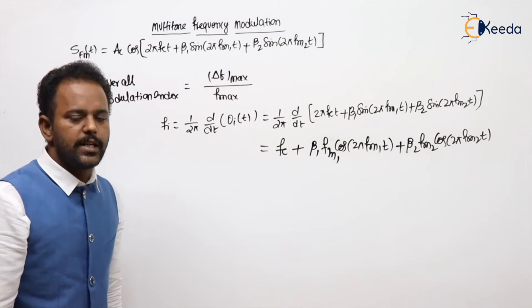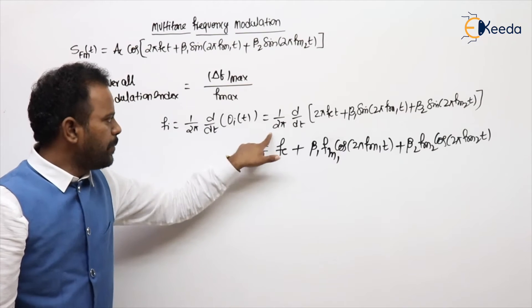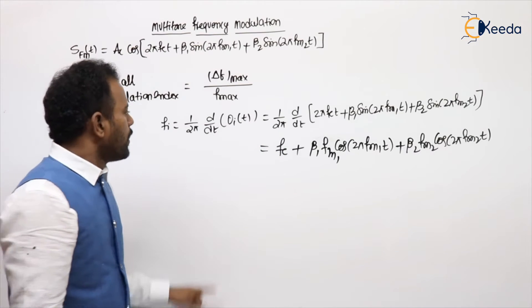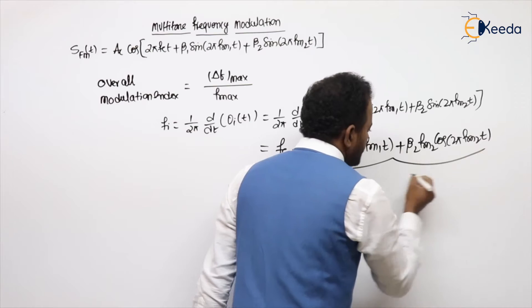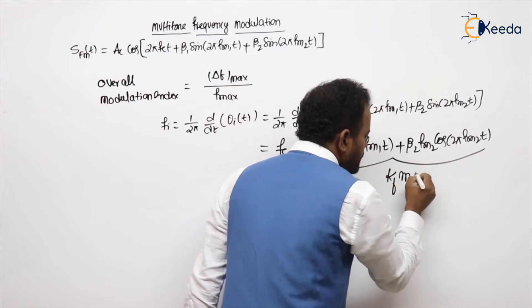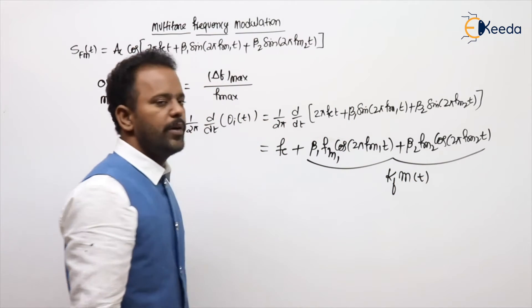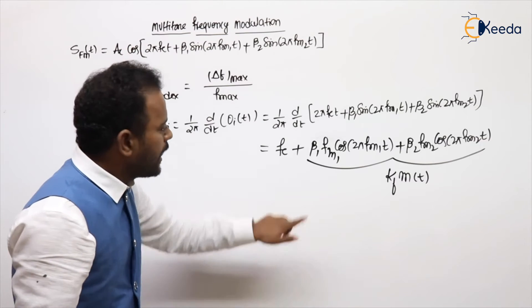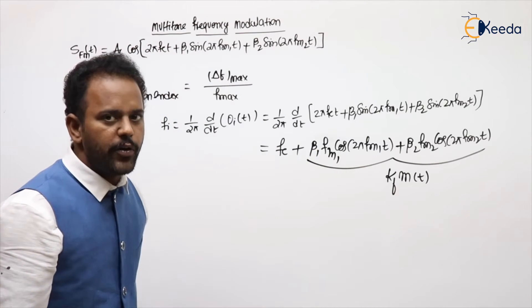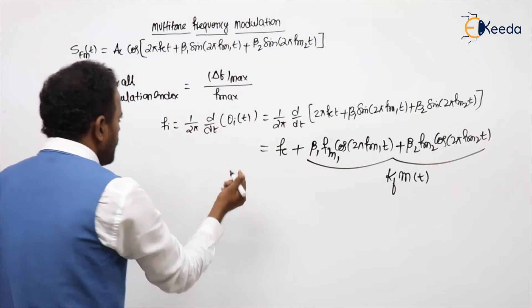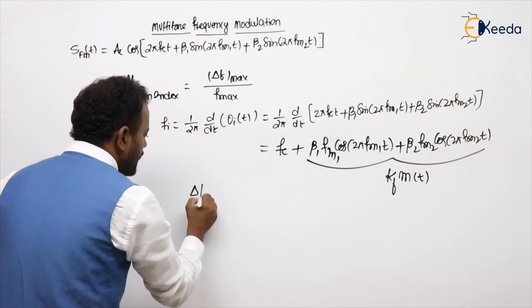Just try to differentiate it and divide by 2π. Now what is kf into m of t? The term added to fc is called kf into m of t. Then what is Δf?